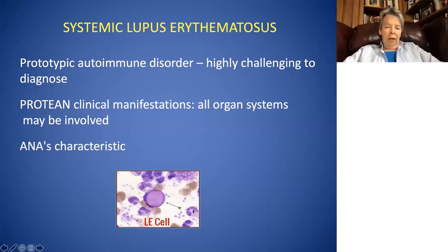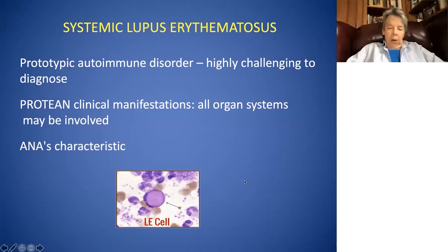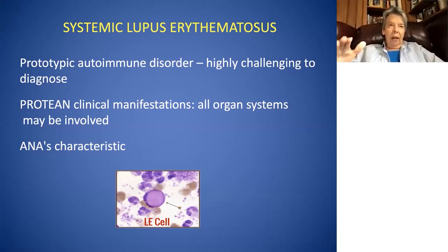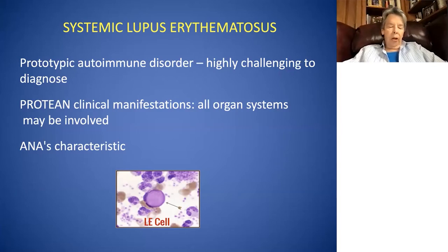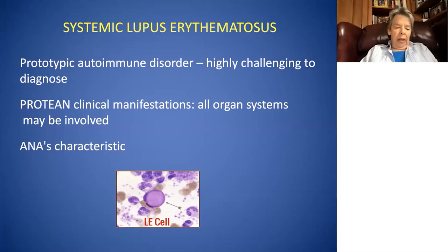You can see a normal poly, and the LE cell certainly doesn't look like that. We can't actually measure for LE cells now because it's not conducive to automated laboratory tests, it's very labor-intensive, and observer-dependent. But this finding, particularly if it's in serous fluids like pleural or pericardial fluid, is pathognomonic of the disease. We really don't measure these anymore.